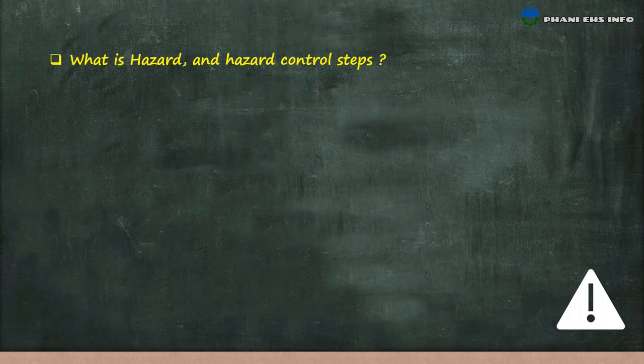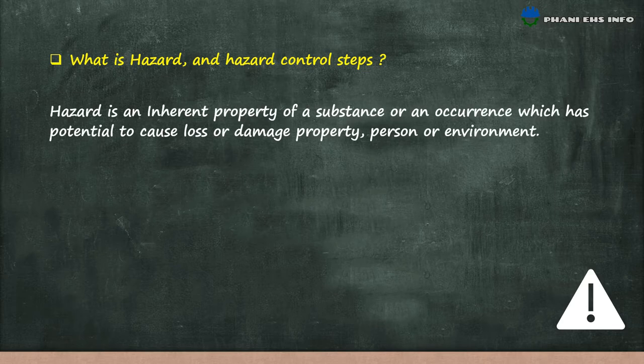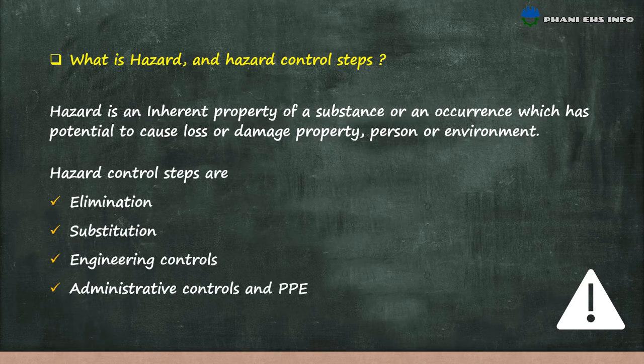What is a hazard and what are hazard control steps? A hazard is an inherent property of a substance or an occurrence which has the potential to cause loss or damage to property, person or environment. Hazard control steps are: elimination, substitution, engineering controls, administrative controls, and personal protective equipment.